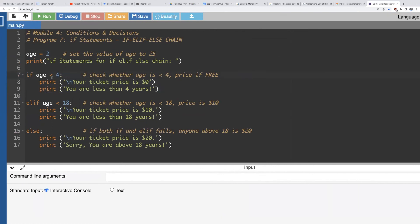So as our condition says if our age is less than four then the price is free or we said zero dollars, if our age is less than 18 years then the ticket price is $10 and if otherwise in the rest case the ticket price is $20.